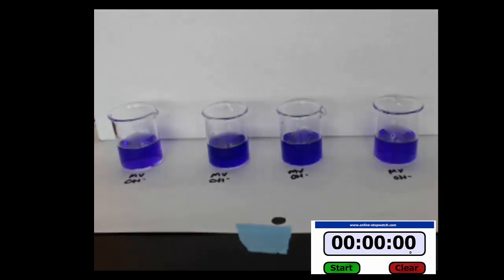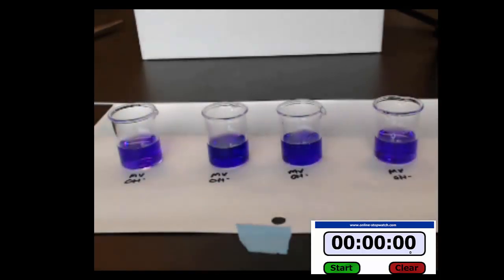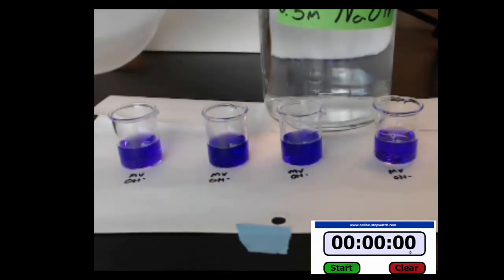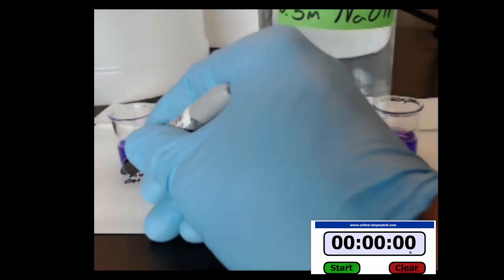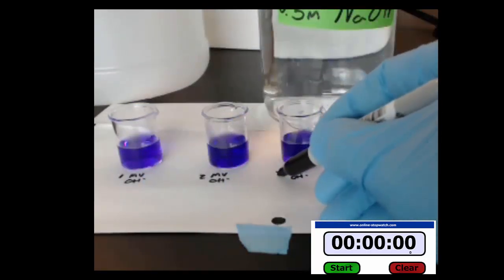Now what I want to do is add concentrated sodium hydroxide to one side and then dilute sodium hydroxide to the other side. That's one molar. On this side, I'm going to add a half molar sodium hydroxide. So here's my notation: that's one,